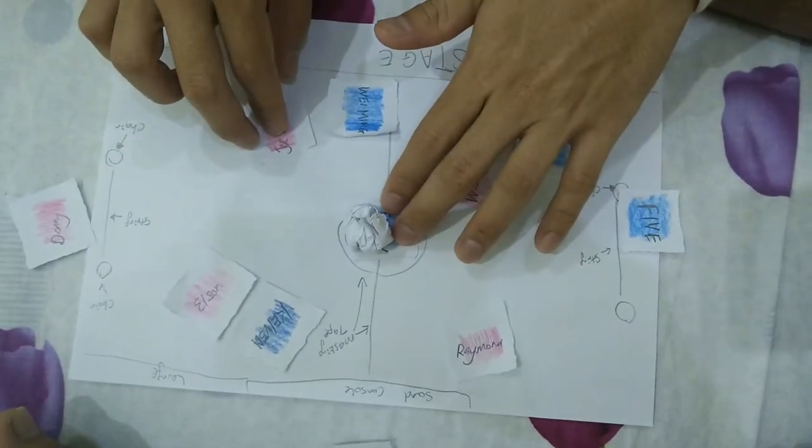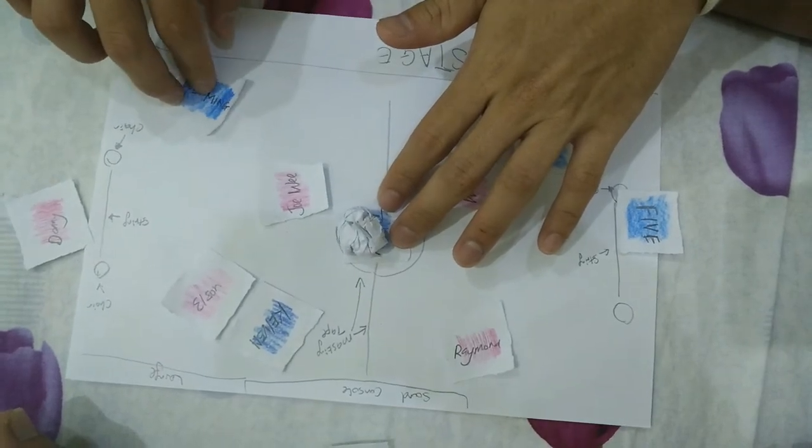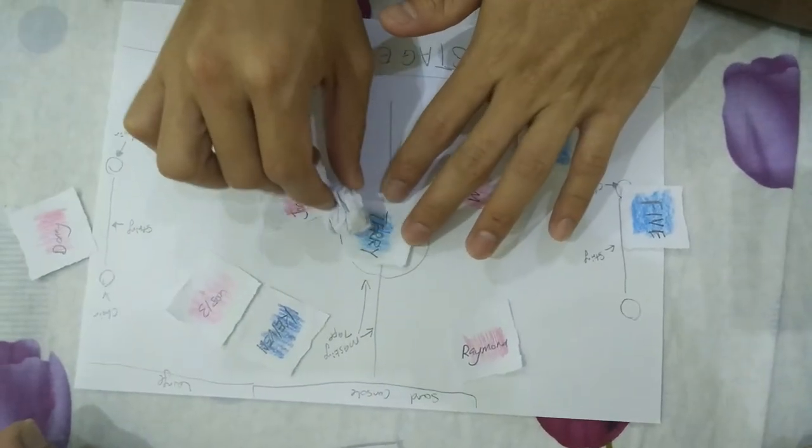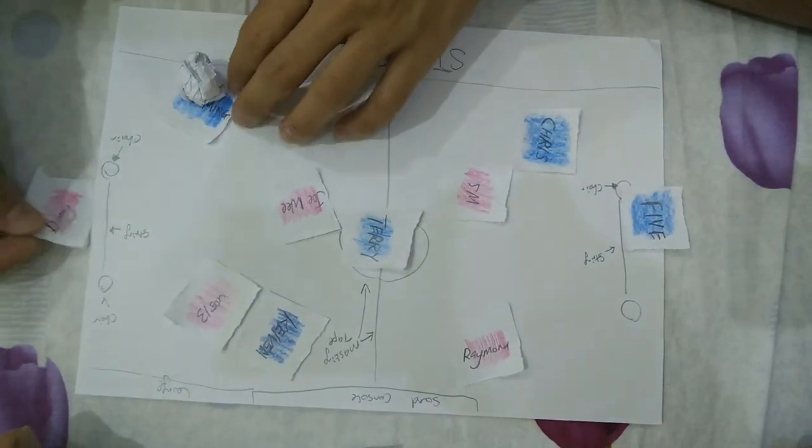So when Terry comes up here, Joey will come and block. Then by the time Wei Ming will be here. When Wei Ming is here, then Terry will pass the ball all the way, do some skills, pass away to Wei Ming and then Danny will be here.